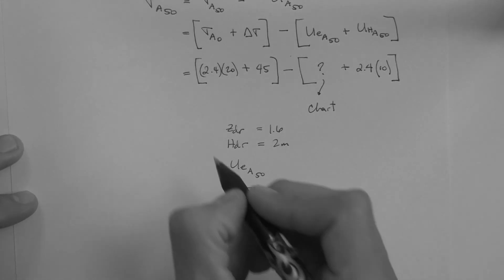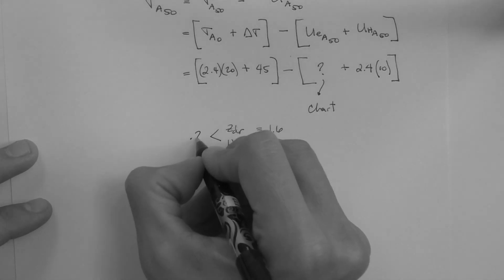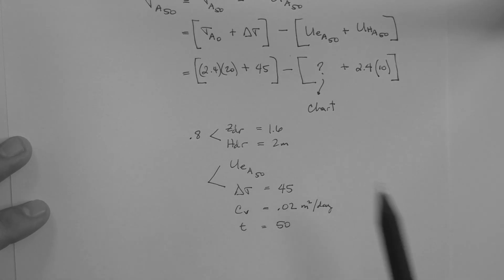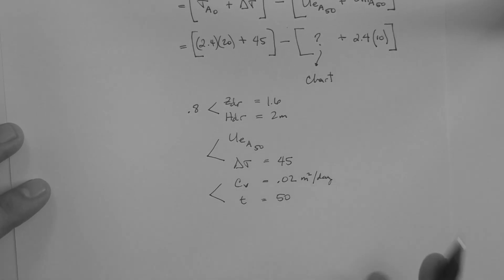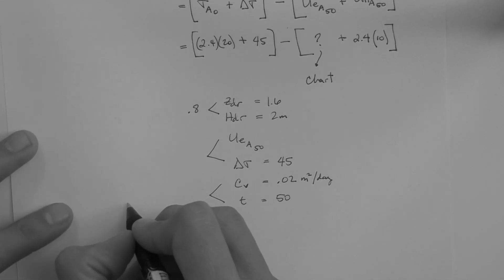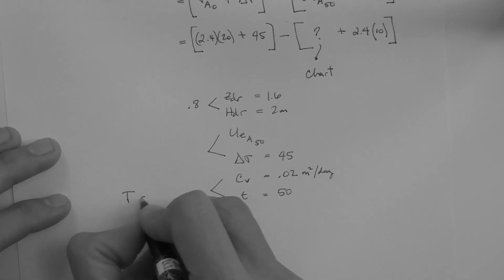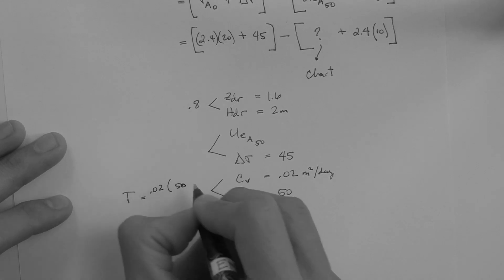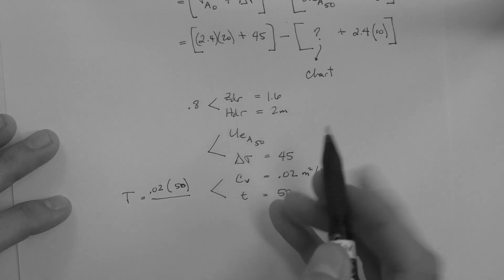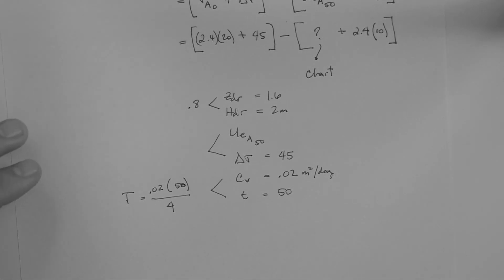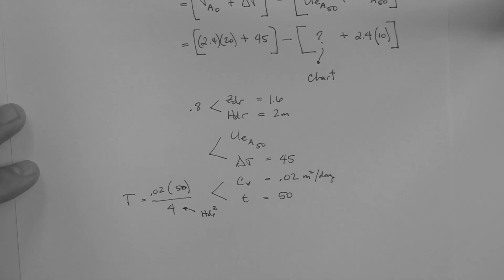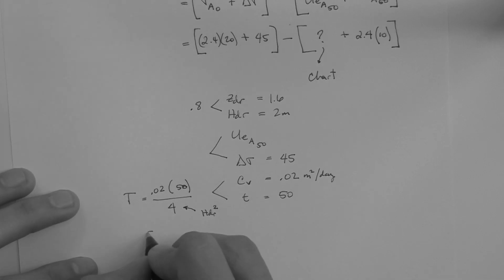Y-axis, 1.6 divided by 2, 0.8. The x-axis, we cannot get that, we're going to get it using the chart. And then the internal axis, or the isochrone capital T, dimensionless time factor axis, is obtained calculating the T, which is C sub V, 0.02, times the time, 50, divided by HDR squared, which is 4. So the time factor is 0.25.